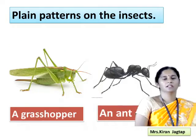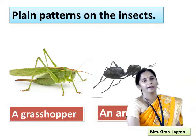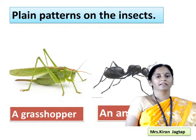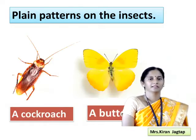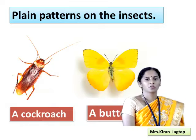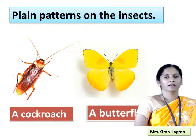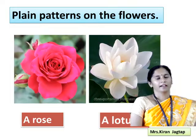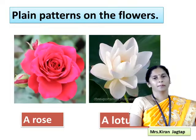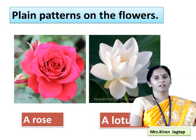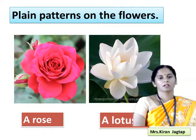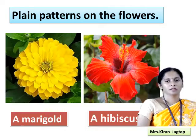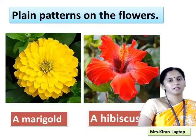Even though we can see the plane patterns on the insects — the grasshopper and an ant, like cockroach and a butterfly. We can again see the plane patterns on the flowers like a rose and a lotus. Marigold and hibiscus.